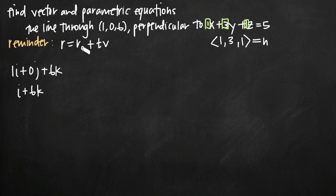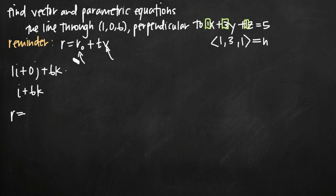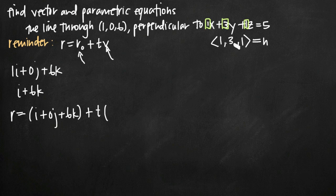This is convenient because to use the vector equation formula, I need a point that the line passes through — I substitute the vector representation of the point for r sub 0 — and I need a vector parallel to my line to substitute in for v. I have both of those things now. So r equals (i plus 0j plus 6k) plus t times (i plus 3j plus k).